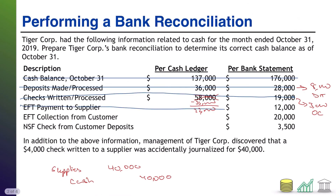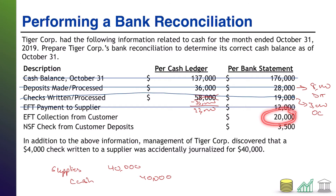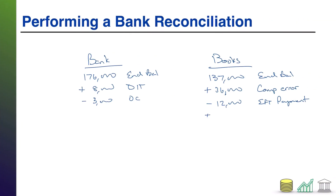Next up: an EFT collection from a customer. Same situation — the customer paid the bank directly on our behalf. The bank knows the customer gave it $20,000, which is already factored into the bank balance. We were the ones that didn't know. So now we have to record plus $20,000 for the EFT collection to our cash ledger to get our balance in line with what the bank already knows happened.